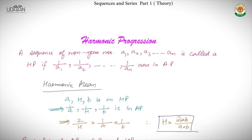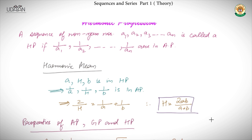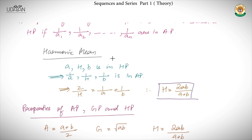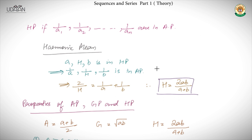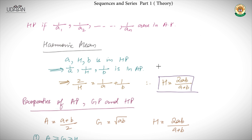Now we define harmonic progression. A sequence of non-zero numbers a1, a2, ..., aₙ is called a harmonic progression if 1/a1, 1/a2, ..., 1/aₙ are in arithmetic progression. So to a great extent, we solve harmonic progressions by converting them to arithmetic progressions. For the harmonic mean: if a, H, b are in HP, then 1/a, 1/H, 1/b are in AP. Using the AP condition, 2/H = 1/a + 1/b.